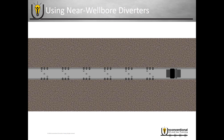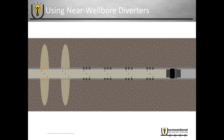Just assuming that we're fracturing and all of our fluid is going into one perforation — what we do is pump a diverter into the wellbore. It goes near wellbore and actually blocks the fluid from entering that perforation that's taking all the fluid. So that forces the fluid to divert and go out of another set of perforations. And that's diversion.